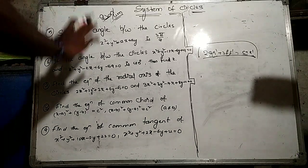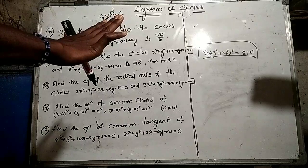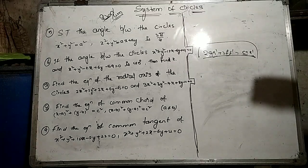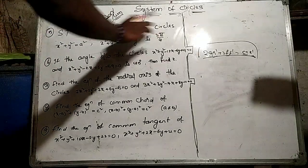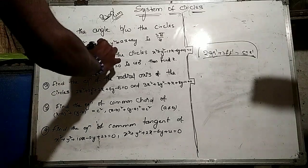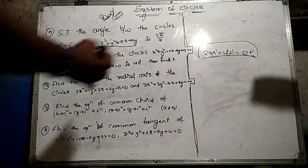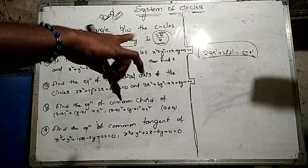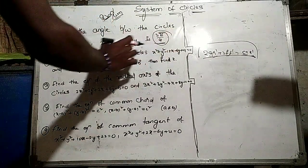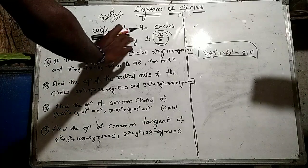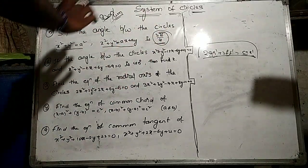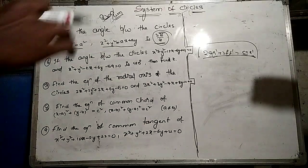If you have questions 4 and 5, you can get 2 marks and 4 marks easily. Practice these types of models and you can get 2 marks and 4 marks. Show that the angle between the circles x squared plus y squared equals a squared, and x squared plus y squared equals ax plus ay, is 3 pi by 4. The angle between these two circles is an important question.